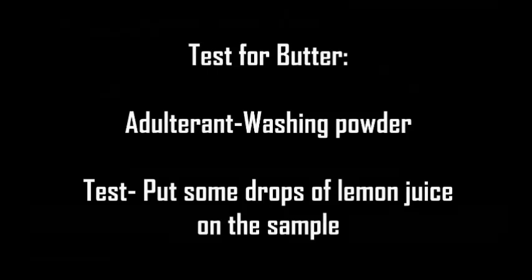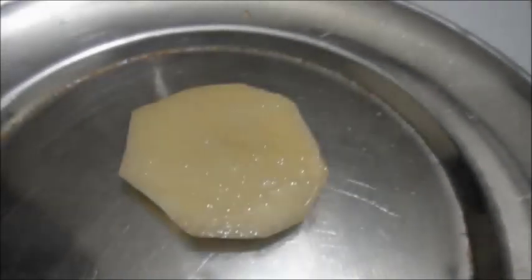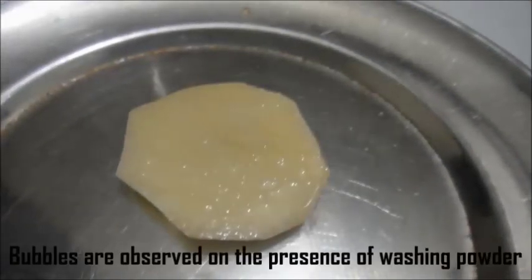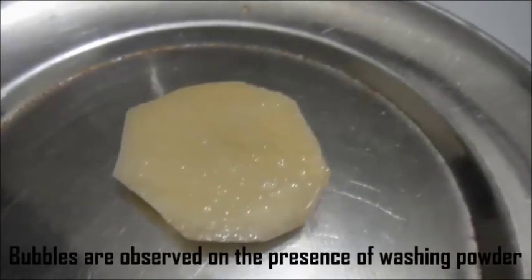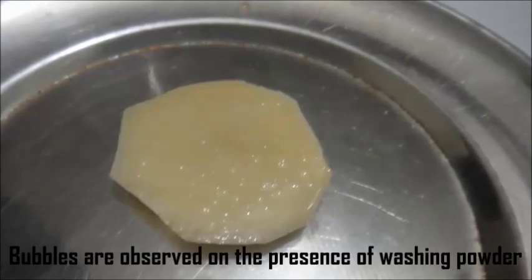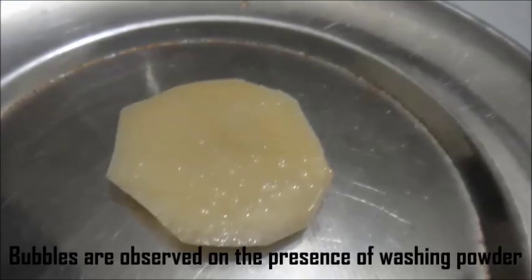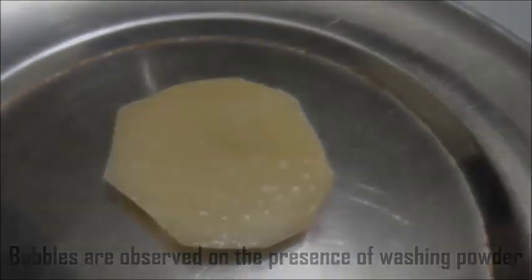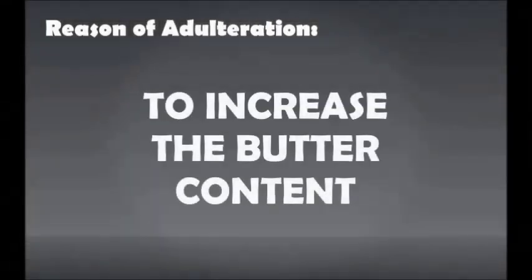Test for Butter — adulterant: washing powder. Put some drops of lemon juice on the sample. Bubbles are observed in the presence of washing powder. Reason of adulteration: to increase the butter content.